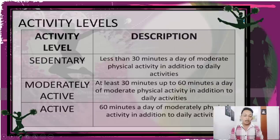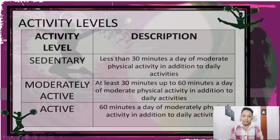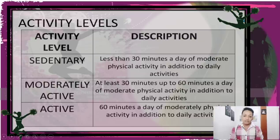These are the different levels of physical activity. For sedentary: less than 30 minutes a day of moderate physical activity in addition to daily activities. For moderately active: at least 30 up to 60 minutes a day of moderate physical activity. For active: 60 minutes a day of moderate physical activity in addition to daily activities. Reflect on which category you fall into.